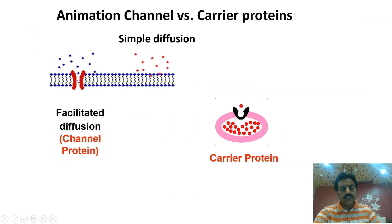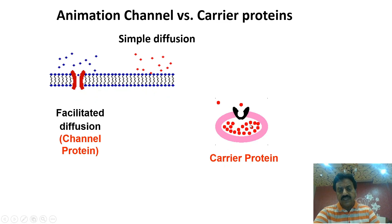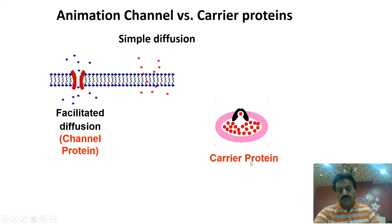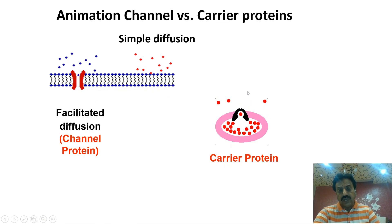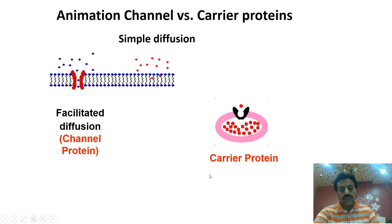Here you can see an animation of facilitated diffusion. This animation shows the material passing through channel proteins, demonstrating facilitated diffusion. This also shows simple diffusion, and the animation illustrates the difference between carrier proteins and channel proteins.